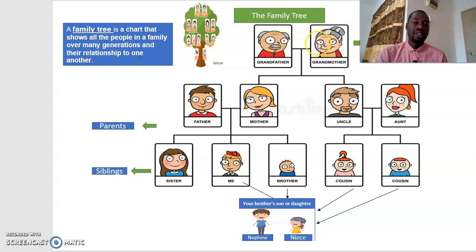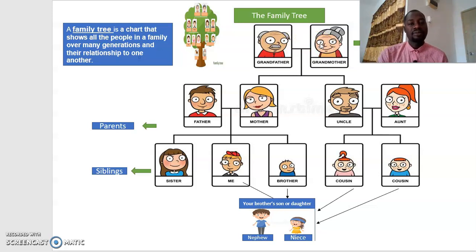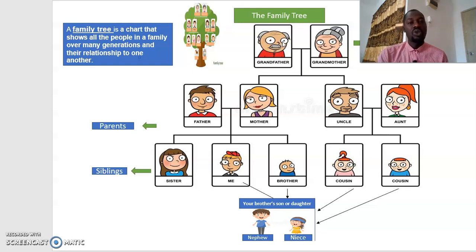Each family is already structured from grandfather and grandmother. Before grandfather and grandmother there is great-grandfather and great-grandmother, and beyond that there are also ancestors. Ancestors means the part of our family who lived long ago and are no longer alive — they have passed away.